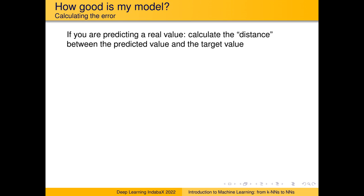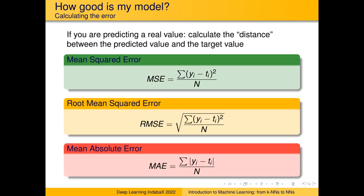How do we evaluate how well the approximation is doing? There are many ways. Here are some error functions — examples of how error can be calculated. What is important is that all three different error functions calculate the difference between y, the actual output, and t, the target output. You take the difference and accumulate it over all examples in your dataset — that's the sigma. If your y's are identical to your t's, there is no error. Most error functions are designed around that concept.